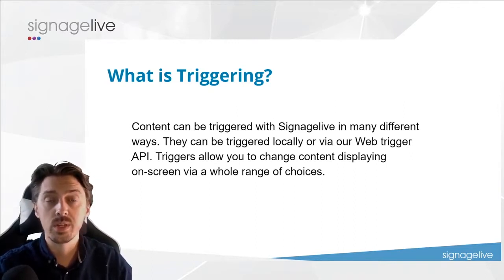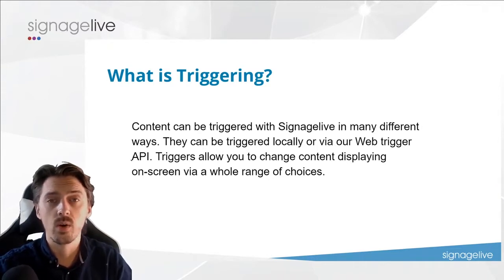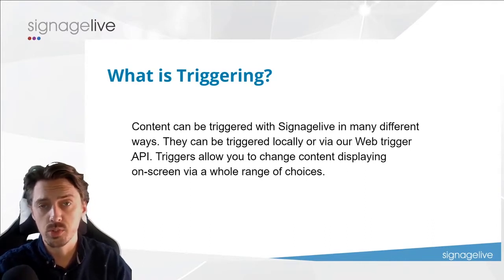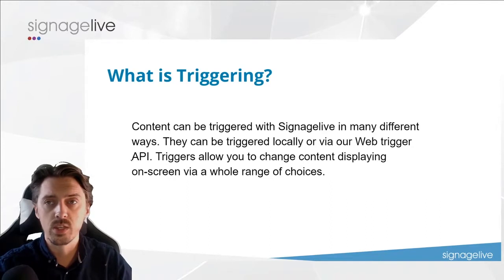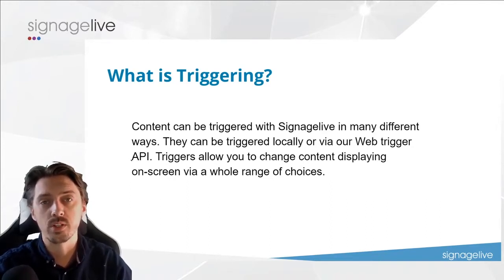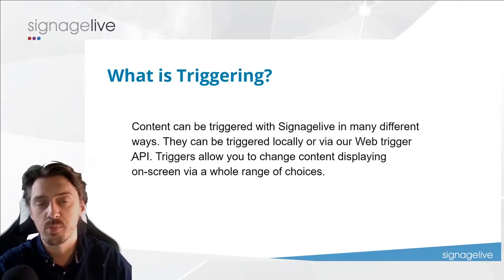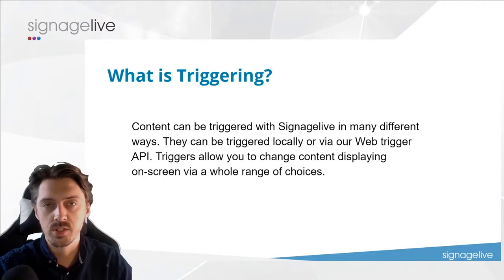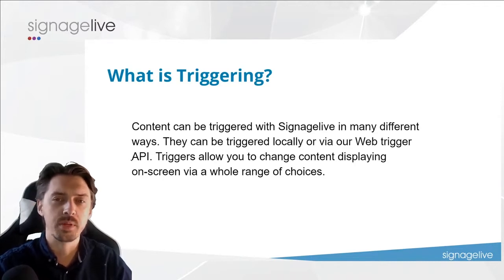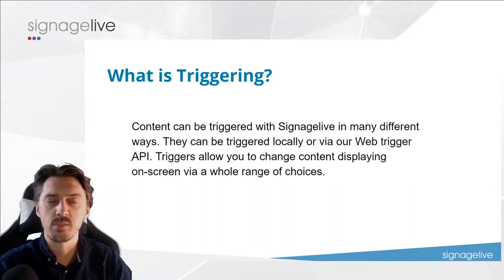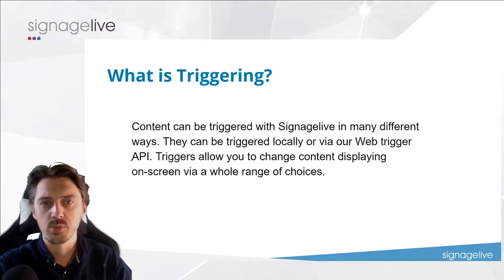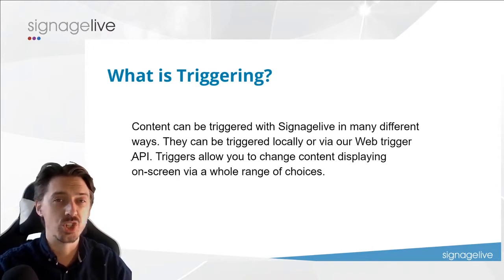To give you a few examples of why you might need triggering: you could be in a retail space and want someone to interact with or touch a screen. It could be a lift-and-learn device where lifting a product tells you more about it on a shop front. In other situations, it could be for emergency messaging — triggering a range of players to display emergency content immediately. There's an important difference in time frame between web triggering for emergencies versus simply changing content within Signage Live.